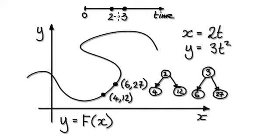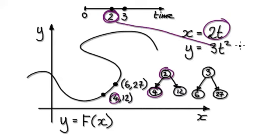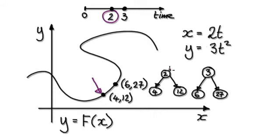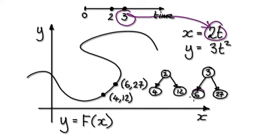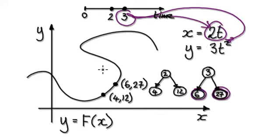So in the previous video, we've got this thing here where when time equals 2, the x coordinate will be 4. And the y coordinate will be 12. So when time equals 2, the particle is here — it spits out an x coordinate of 4 and a y coordinate of 12. And when time equals 3, the particle will be right here, so the x coordinate will be 6 and the y coordinate will be 27.